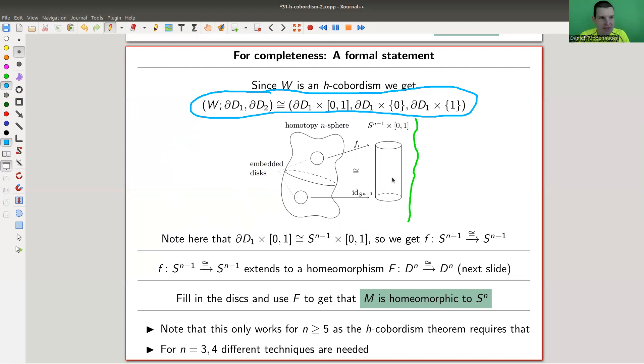And being an H-cobordism means that we have this induced homeomorphism. So W is essentially, like in this picture here, is essentially just a cylinder. A cylinder with two punctures. So not a cylinder with two punctures, a cylinder, which is a sphere with two punctures.